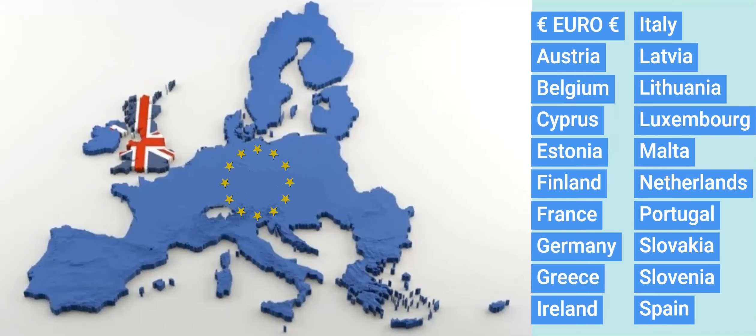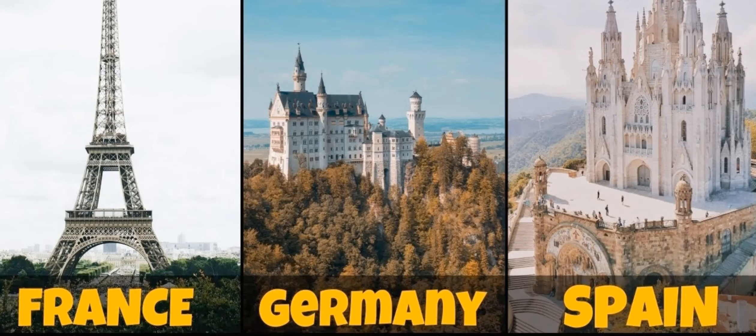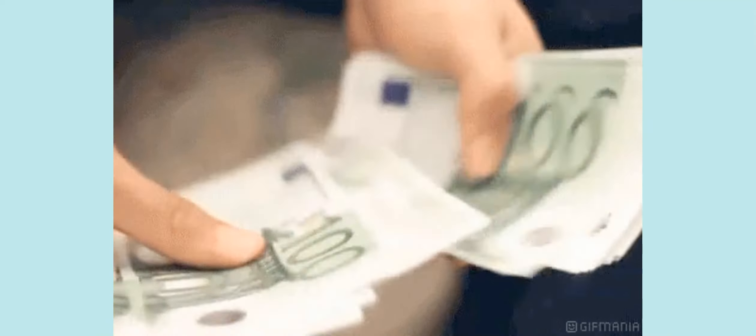About European Union currency: several countries use the euro as their official currency. The euro was introduced on January 1st, 1999, after being a goal of the European Union and its predecessors since the 1960s.